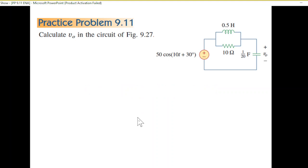So straight away to the question: calculate v₀ in the circuit of the figure. v₀ is the voltage across the capacitor. You can see we have a cosine signal as an input, then there's an inductor and a resistor in parallel, and with that in series is a capacitor.